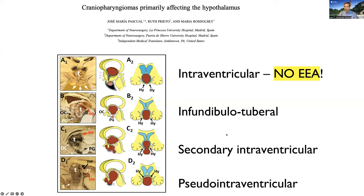In this study by Chema Pascual, we have a classification of intraventricular craniopharyngiomas, which are not good for the endonasal approach — these require transcranial transventricular approaches. Then we have three subtypes: the infundibulotuberal, which arises from the floor of the third ventricle; the secondary intraventricular, which breaks the floor of the third ventricle from the suprasellar system into the third ventricle; and the pseudo-intraventricular, which simply displaces the third ventricle up.